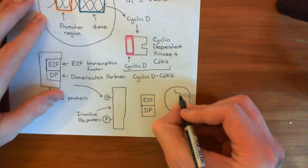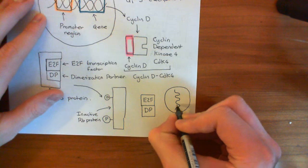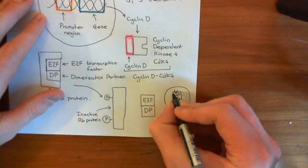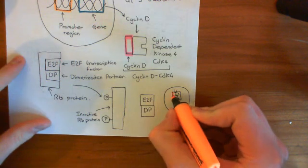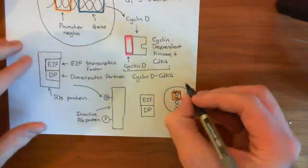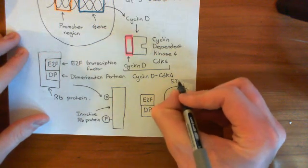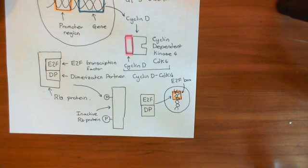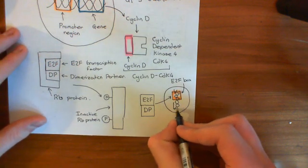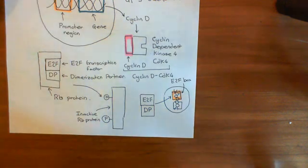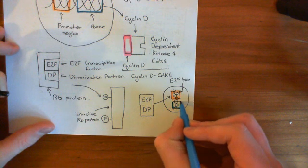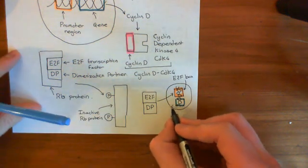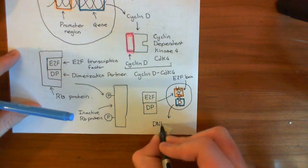There are many genes that have a binding site for this transcription factor dimer in their promoter region. That specific binding site is known as an E2F box. E2F, along with its dimerization partner, goes and binds to this E2F box in the promoter region of genes and activates their transcription. This gives rise to the proteins which actually cause the beginning of DNA replication — you get DNA replication when these proteins are created.